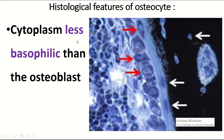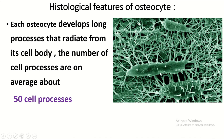The cytoplasm of the osteocyte is less basophilic than the osteoblast. This is the cytoplasm of the osteoblast, and this is the cytoplasm of the osteocyte — less basophilic. This is the cell body of the osteocyte, and these are the cytoplasmic processes, which arise in a radiating manner. The number per cell is an average of 50 processes.